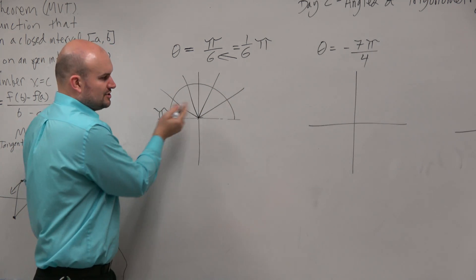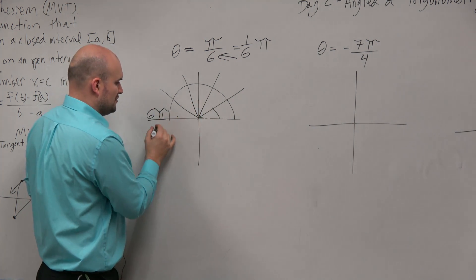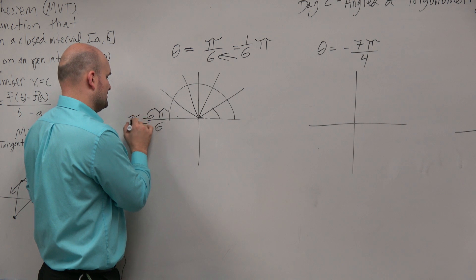So break it up into six portions. One sixth, two sixths, three sixths, four sixths, five sixths, six sixths. You guys agree with me that six times pi over 6 is equivalent to pi, right?